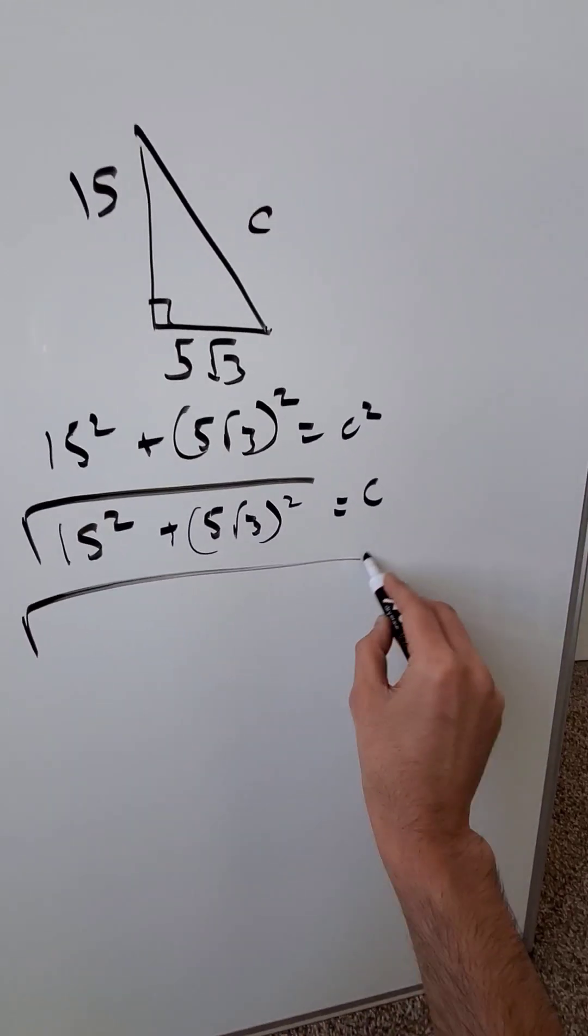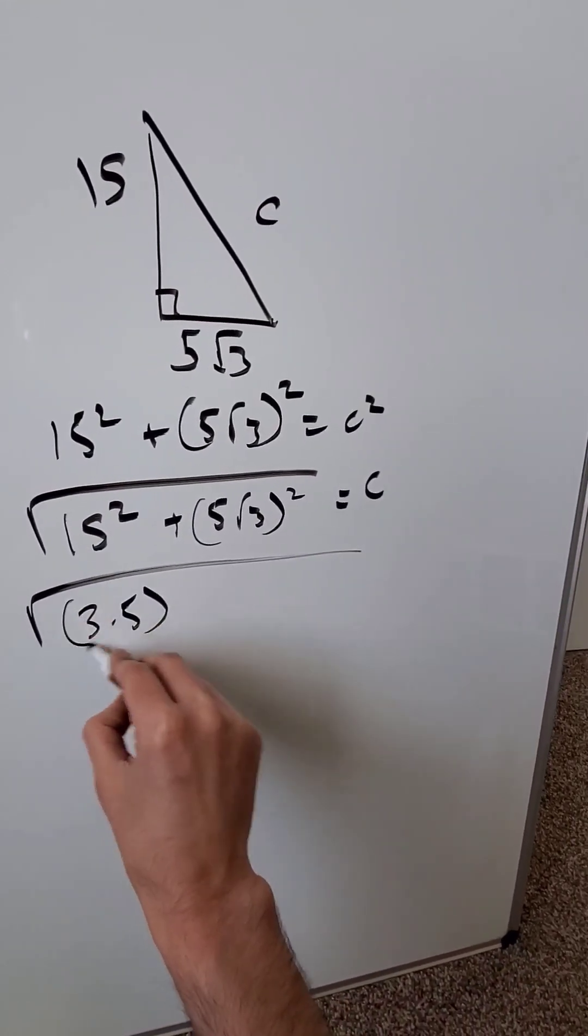Again, no calculator. Look what I'll do. I'll bring 15 as the 3 times 5 and I'll put a whole square.